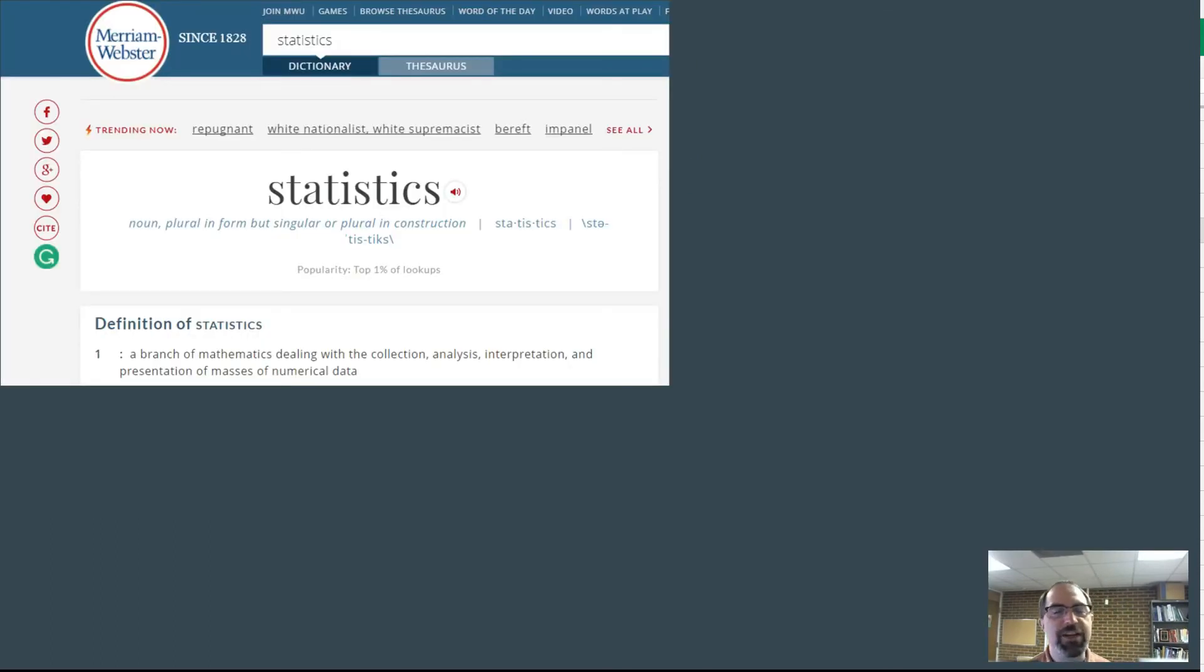You could look up the dictionary definition of statistics. Merriam-Webster defines this as a branch of mathematics dealing with the collection, analysis, interpretation, and presentation of masses of numerical data, which basically is just saying we're just working with numbers. We're saying let's understand what's going on in numbers in all sorts of ways, collecting it, analyzing it, presenting it to other people.